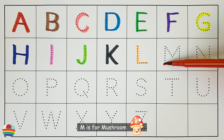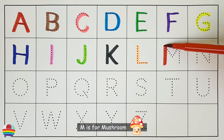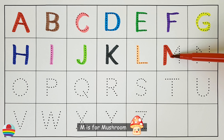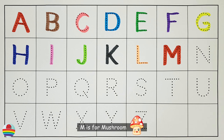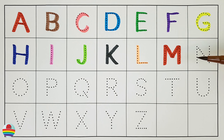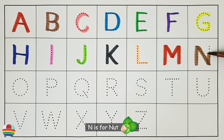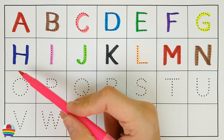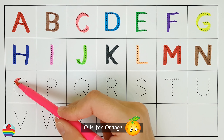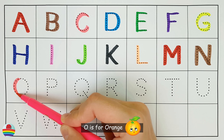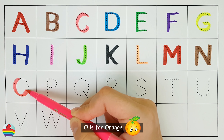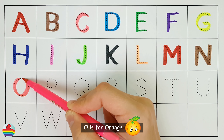M. M is for mushroom. M. N. N is for nut. N. O. O is for orange. O.